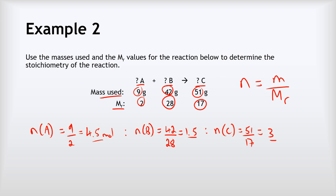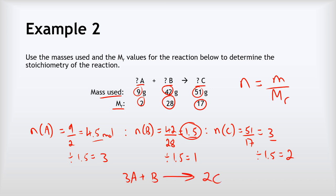We've got a ratio of 4.5 to 1.5 to 3. To simplify, divide by the smallest value, 1.5: 4.5 ÷ 1.5 = 3, 1.5 ÷ 1.5 = 1, and 3 ÷ 1.5 = 2. So in the balanced equation we have three A's, one B, and two C's. The equation is: 3A + B → 2C.